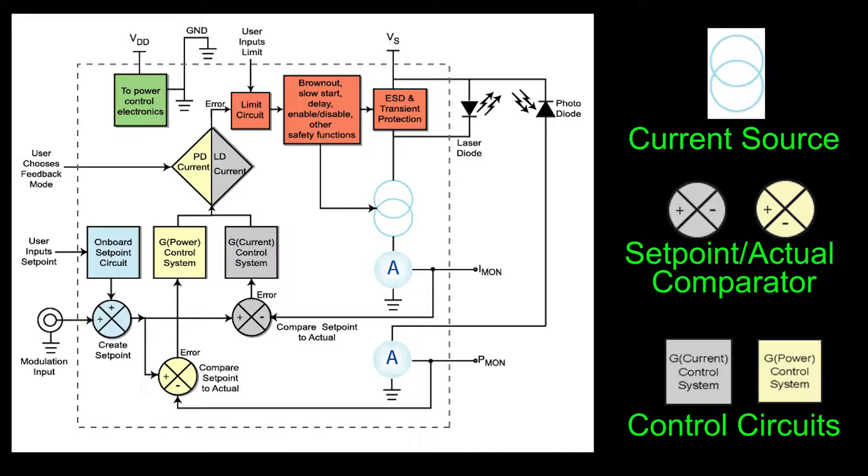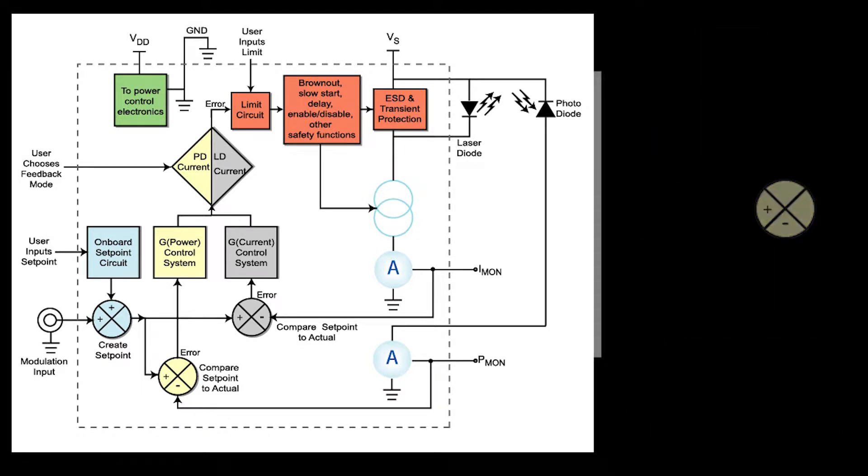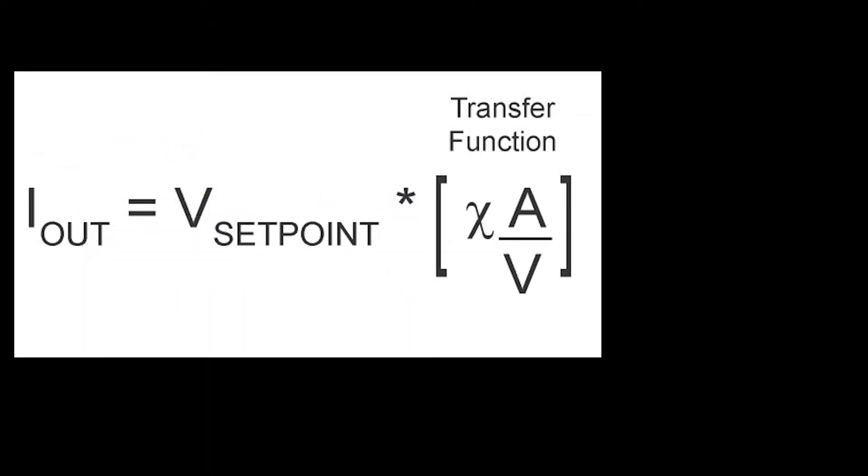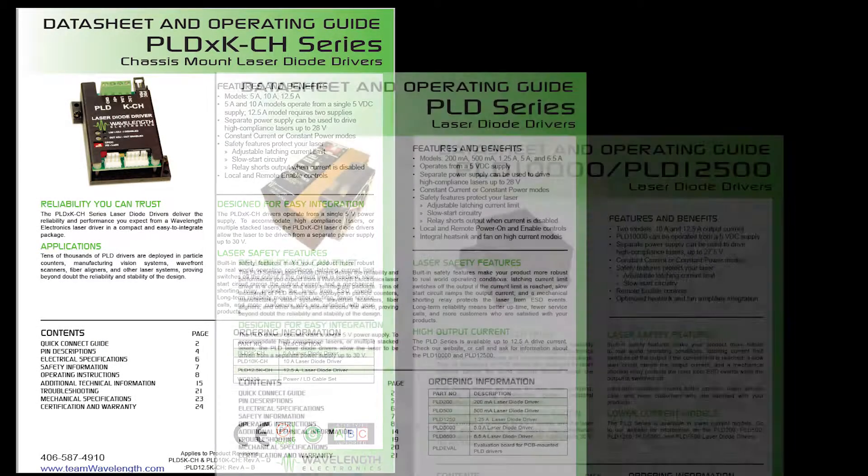The set point is a voltage that represents the output current. This voltage and output current are related by a transfer function that varies by driver model number. Transfer function details for set point, monitors, and analog input can be found in the datasheet.